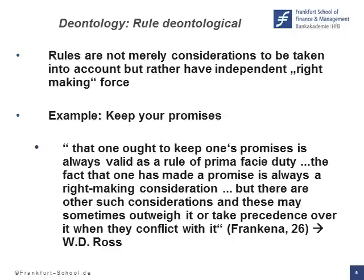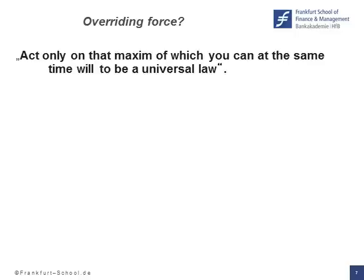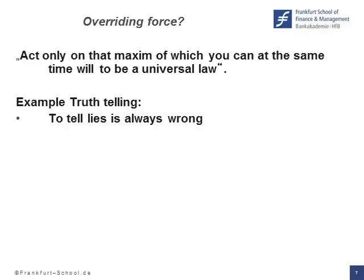Now, that is fine. However, the norms and precepts don't have overriding force anymore. Let's go back: act only on that maxim of which you can at the same time will to be a universal law. If it would have overriding force rather than being only prima facie obligatory, we come to the following conclusion: is truth-telling always obligatory? Well, Kant would say, to tell lies is always wrong — period.